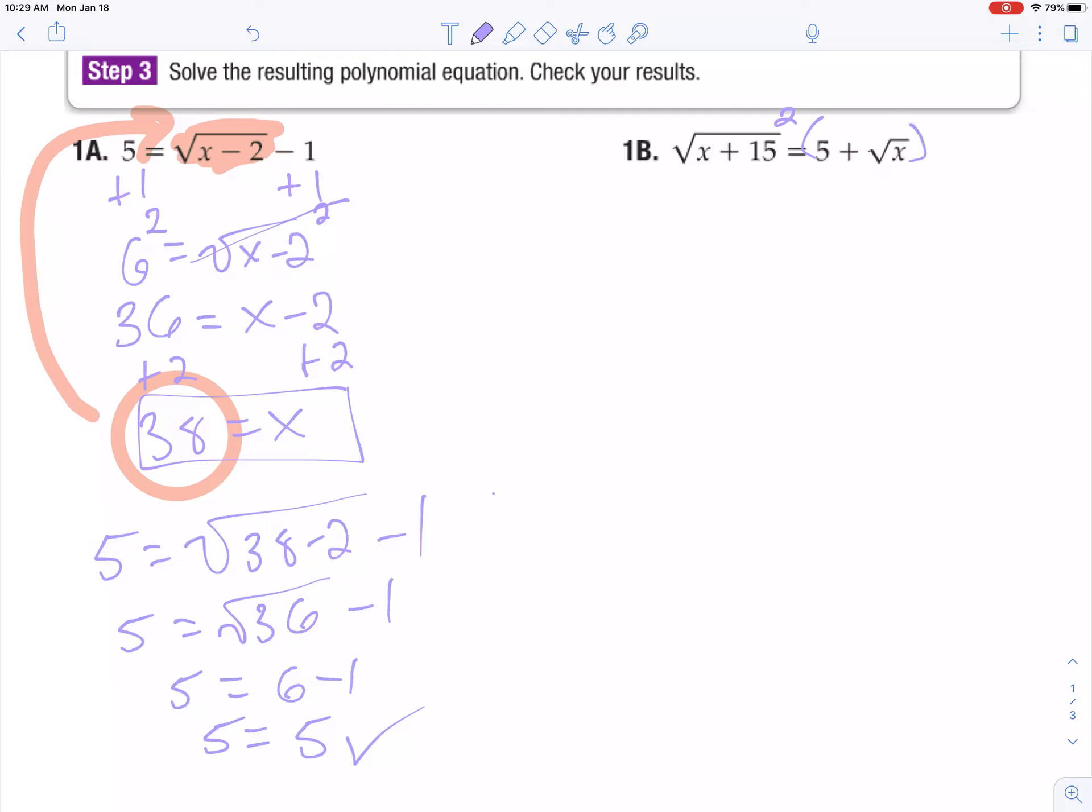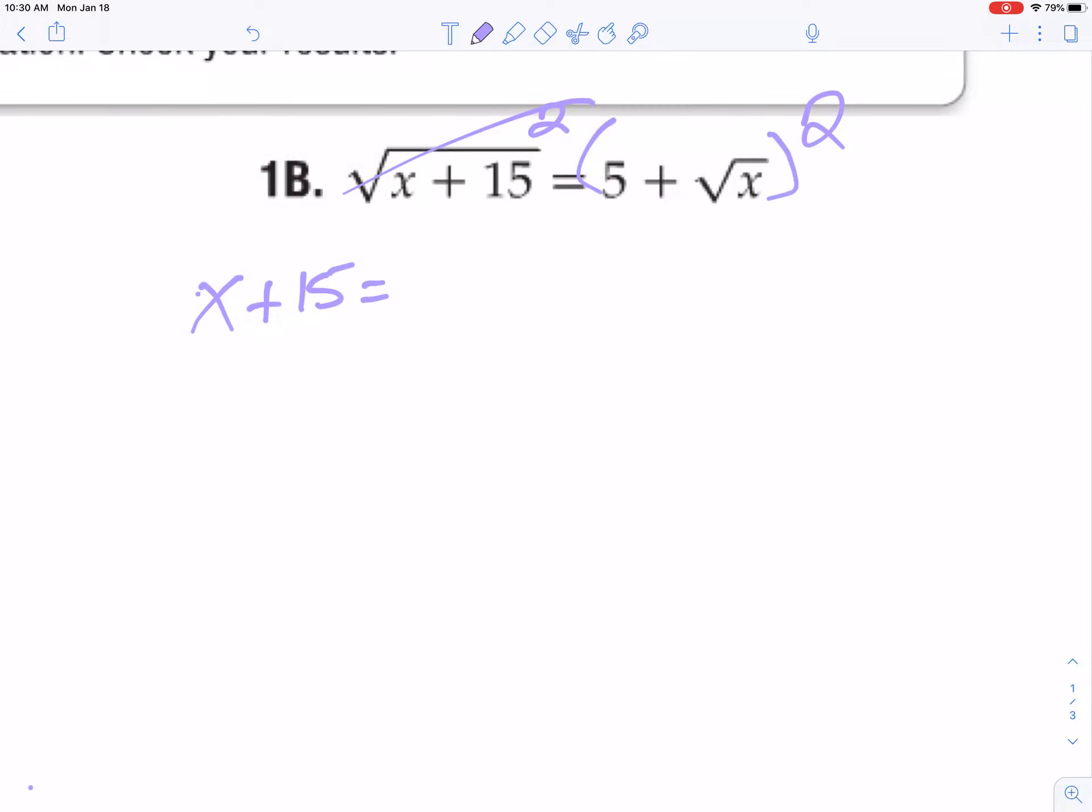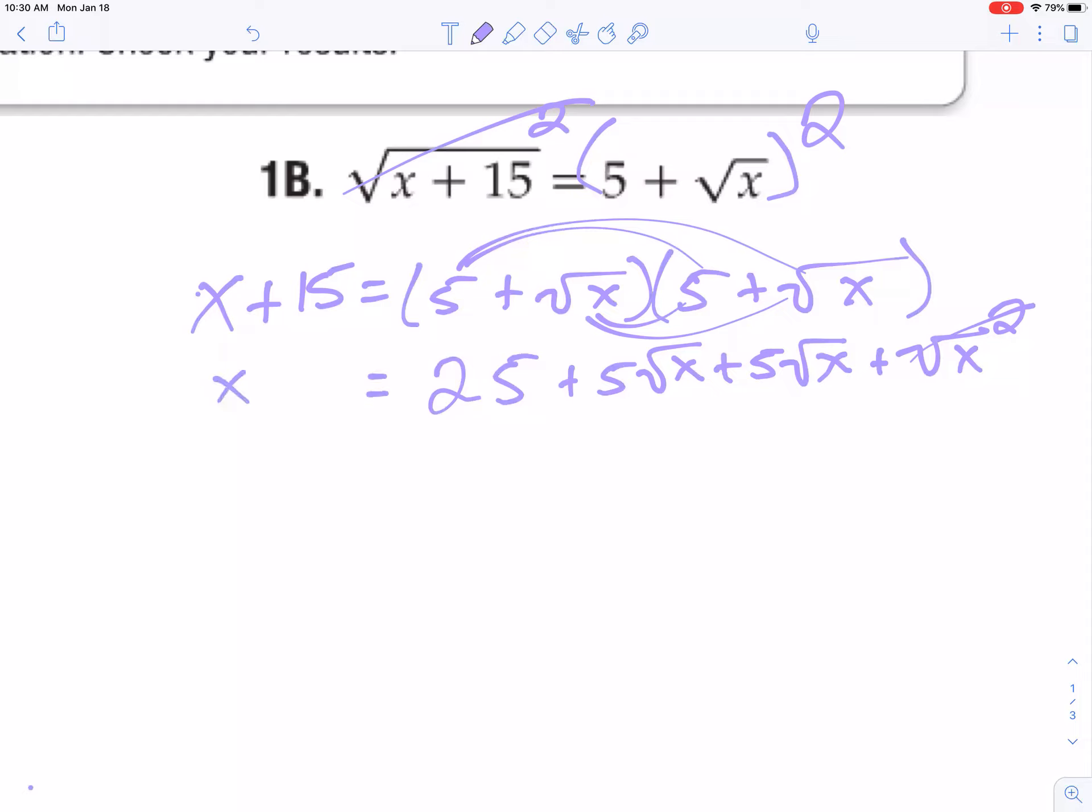However, remember when you're squaring, you're squaring the entire side. So it's like it gives me little parentheses there. So that will give me x plus 15 on this side. And then I think on the right, I'm going to have to recognize that this is a little mini foil problem, so 5 times 5 is 25 plus 5 root x plus 5 root x plus the square root of x squared, which will allow that to cancel. So now what I need to do is subtract 25 from both sides. That will just be 10 root x plus x.